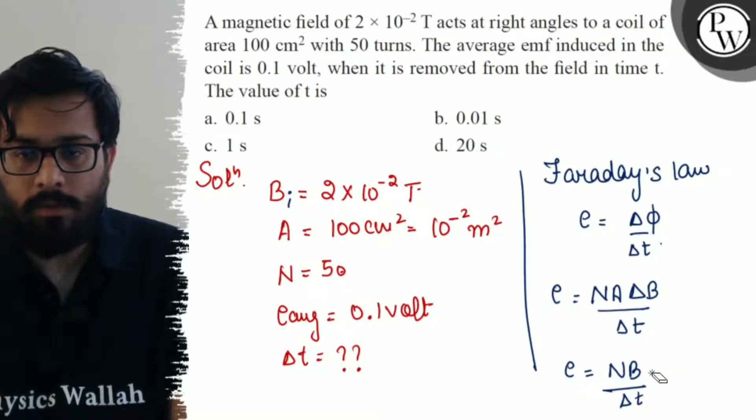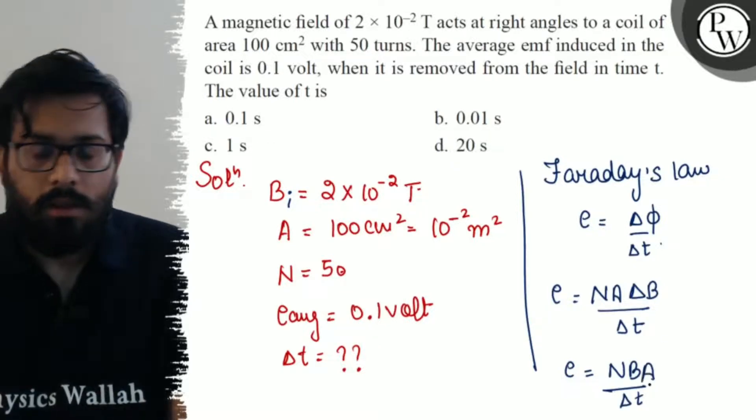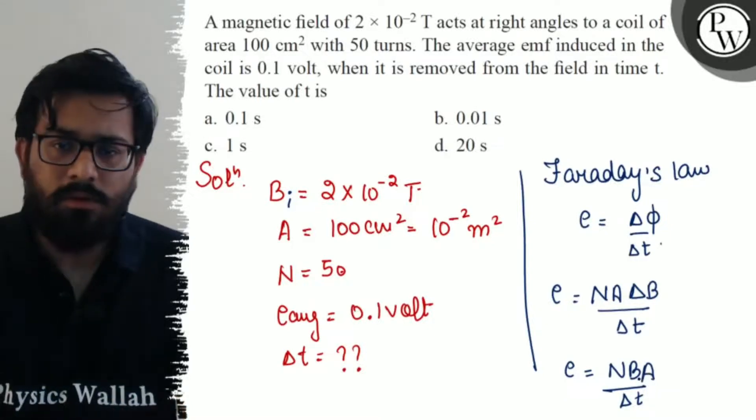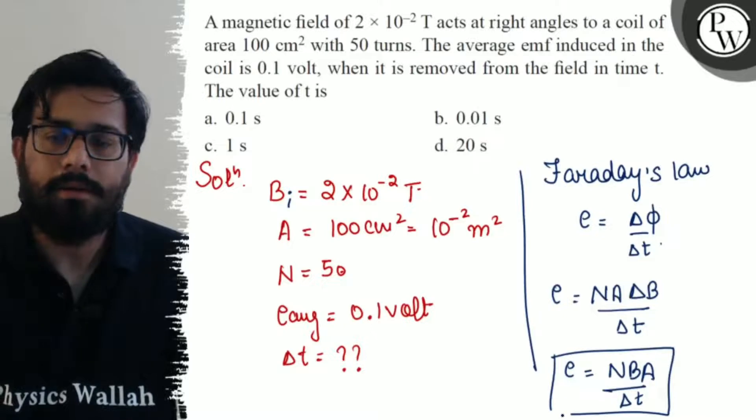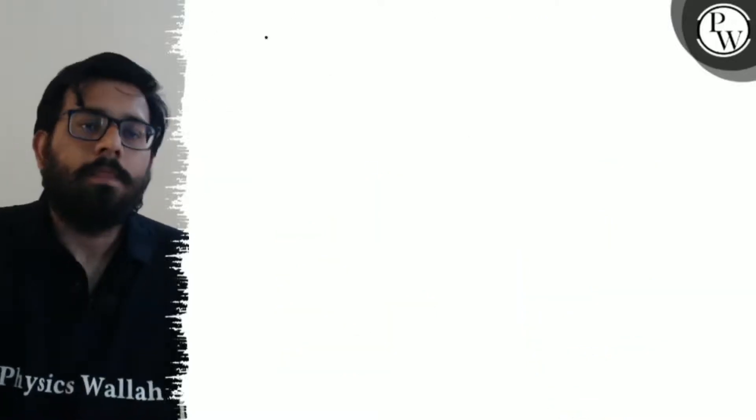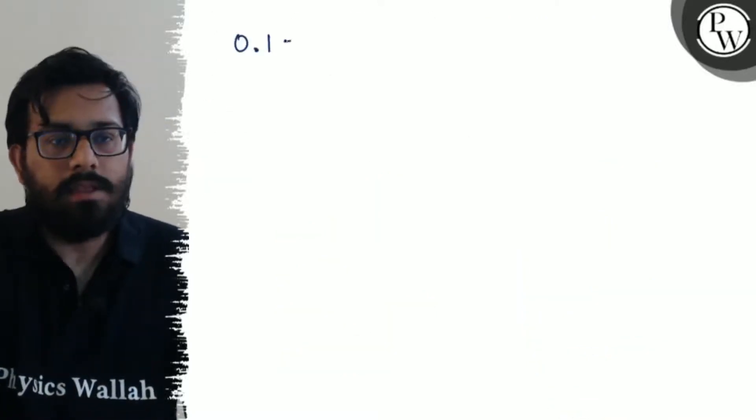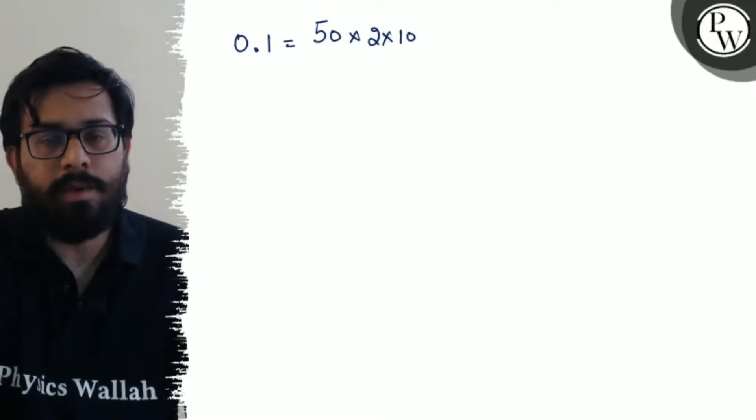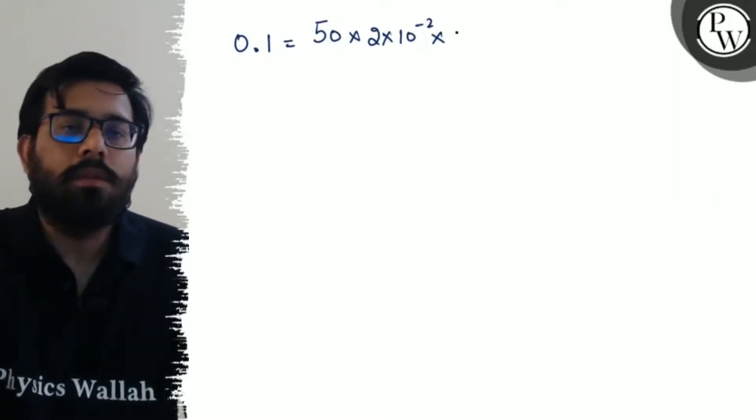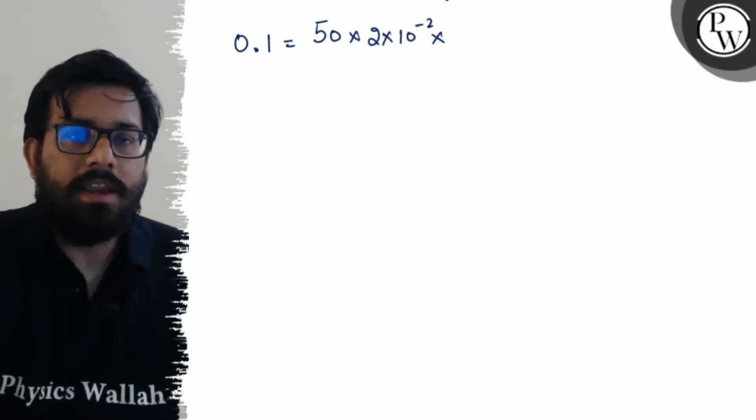Since the final magnetic field is zero, the induced EMF is N × B × A / Δt. So e = 0.1 = 50 × (2 × 10^-2) × 10^-2 / Δt, which we have to calculate.